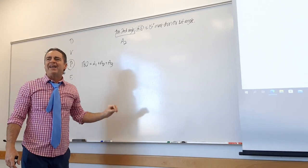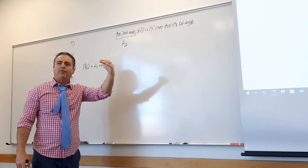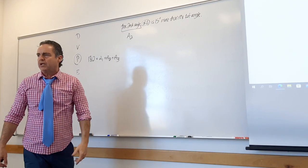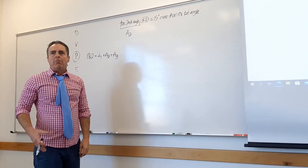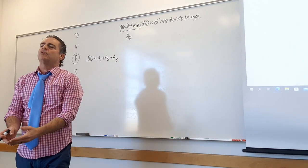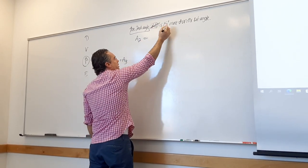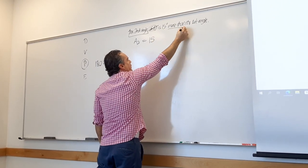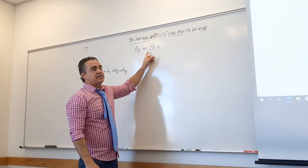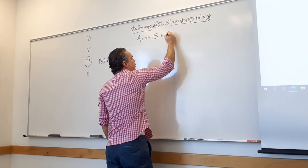Now we have to define angle 1, angle 2, and angle 3. What's angle 1? It's x — we always start with x. And that's written right there. What's angle 2? From the drop-down translate: A2 = 15 + x. The third angle is 10 degrees more than 3 times the first angle — that's also a comparison statement, comparing the third angle to the first angle. A3 = 10 + 3x.